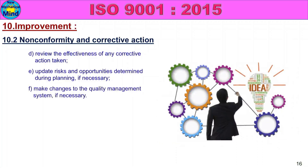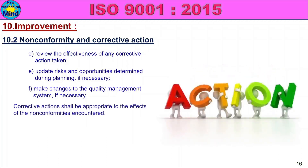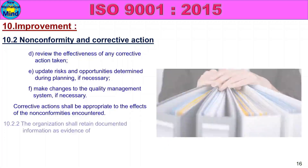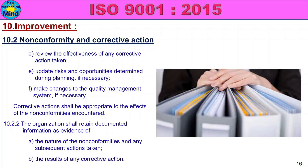In the quality management system, we need to update the changes. Corrective actions shall be appropriate to the effects of the non-conformities encountered. If we face the problem, we can update the corrective actions. 10.2.2: The organization shall retain documented information as evidence of the nature of the non-conformities and any subsequent actions taken. The results of any corrective actions.